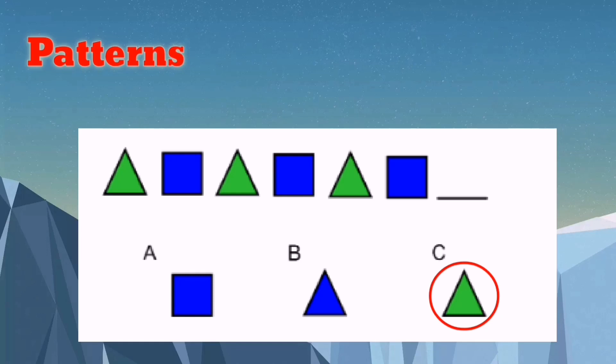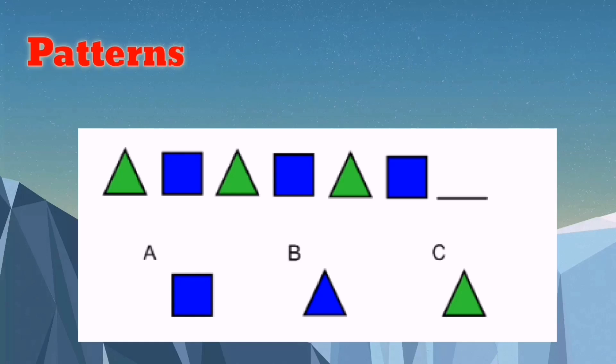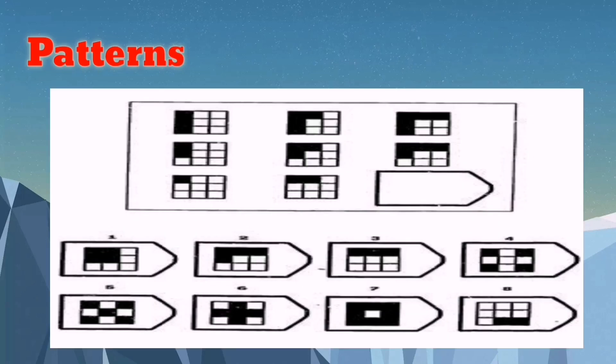Very easy, right? Now let's have the next pattern. In this pattern, what you're going to do is observe the shaded part. Now let's observe first the patterns of the boxes. In the first column, three boxes were shaded, then two boxes were shaded, then one box was shaded.